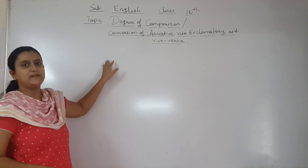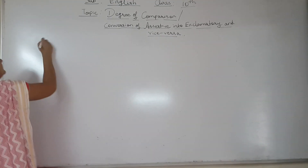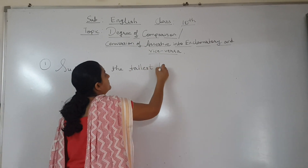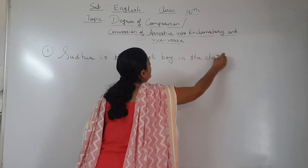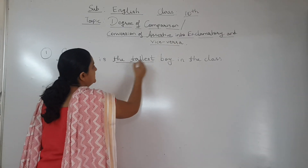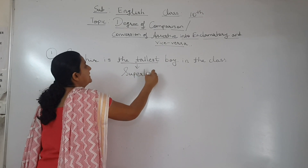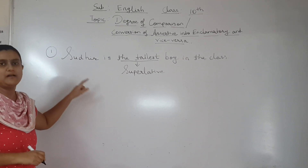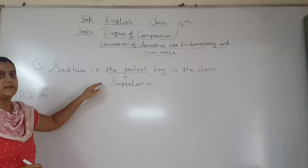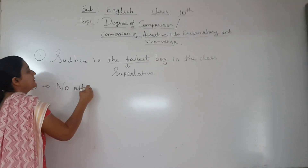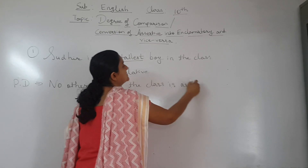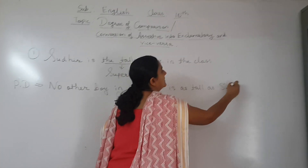Now I will give you one example. The sentence is: Sudhir is the tallest boy in the class. This sentence is in which degree? The tallest suggests it is in superlative degree. Now we will convert this sentence into positive and comparative degree. Whenever we are converting to positive degree from superlative, we will start the sentence with 'no other.'